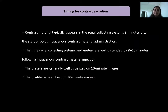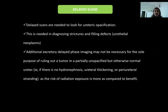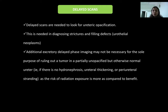Contrast material typically appears in the renal collecting system 3 minutes after the start of bolus IV contrast. The intrarenal collecting system and ureters are well opacified by 8 to 10 minutes, ureters are well visualized on 10-minute images, and the bladder is best seen on 20-minute images. Delayed scans are needed for ureteric opacification and diagnosing strictures and filling defects. However, additional delayed phase imaging may not be necessary solely to rule out a tumor in a partially unopacified but otherwise normal ureter — i.e., if there is no hydronephrosis, ureteral thickening, or periureteral stranding, the radiation risk outweighs the benefit.